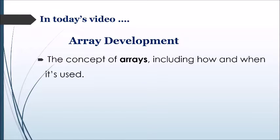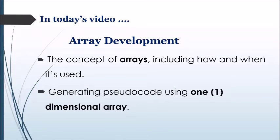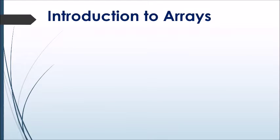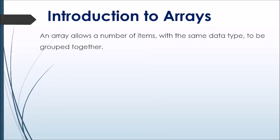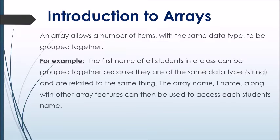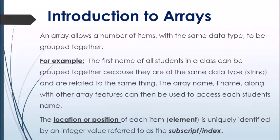We will also be generating pseudo code using one-dimensional arrays. Introduction to arrays: an array allows a number of items with the same data type to be grouped together using one name. For example, the first names of all students in a class can be grouped together because they are of the same data type — string — and are related to the same thing. The array name, along with other array features, can then be used to access each student's name. The location of each item in the array is uniquely identified by an integer value referred to as the subscript or index.